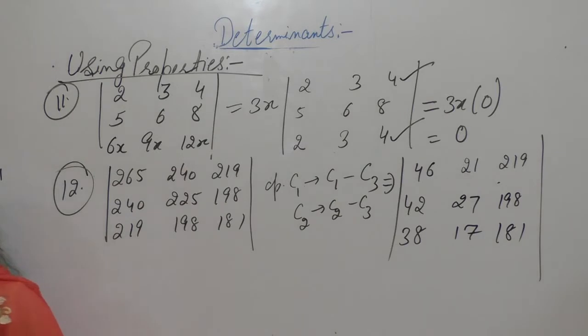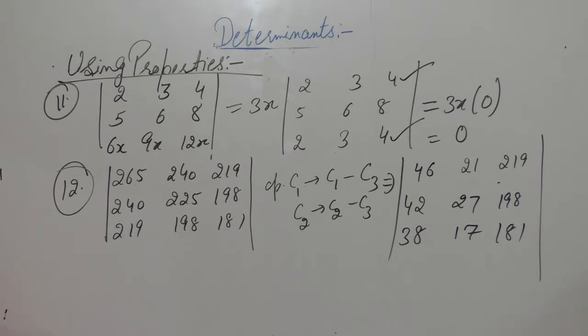After the column operations the resulting matrix is: row 1: 46, 21, 2, 1, 9; row 2: 42, 27, 1, 9, 8; row 3: 38, 17, 1, 8, 1.